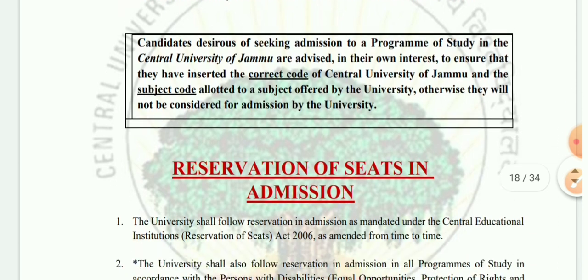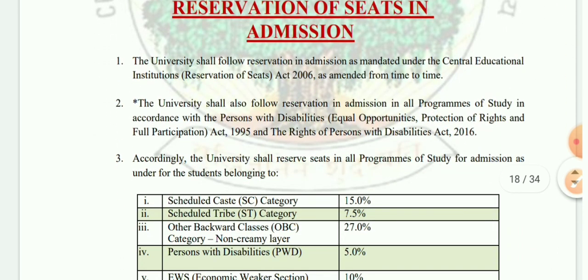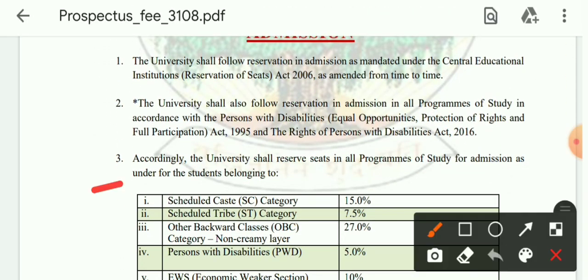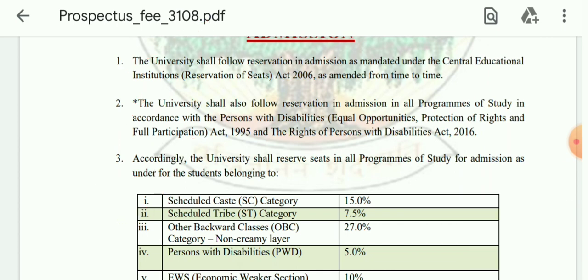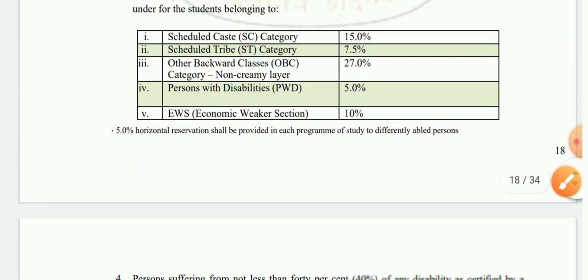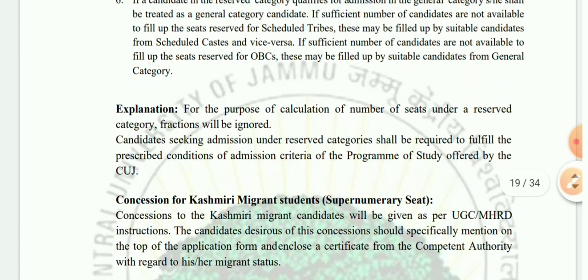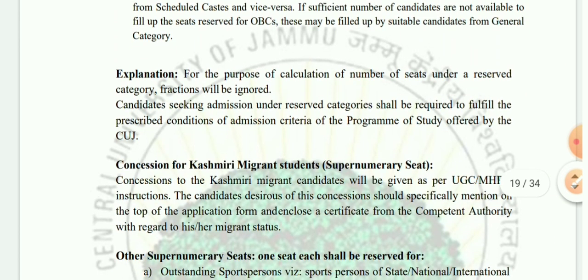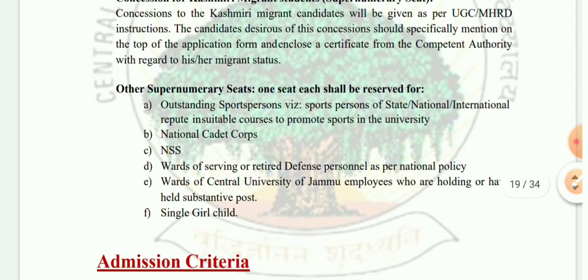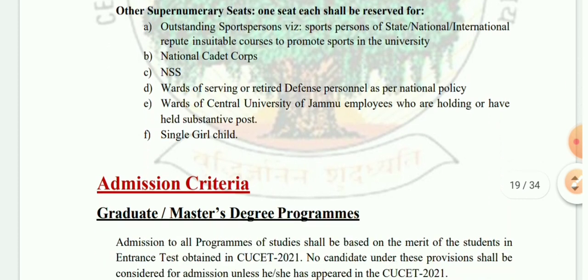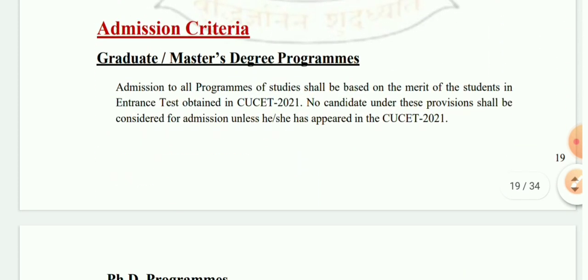Here, reservation of seats in admission is given. You can see the seat reservation of Central University of Jammu. Admission criteria for graduate or master's degree programs are given here.